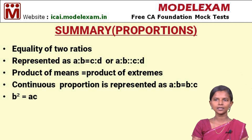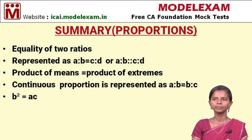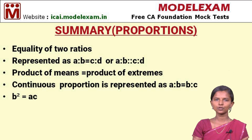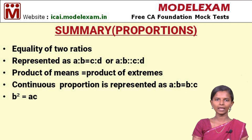The next point is continuous proportion, where there are only three terms: A, B, and C. We write it in proportional form as A is to B equals B is to C. Here also the product of extremes equals the product of means, giving us B squared equals A times C. The mean proportional value will be B, so if we want to find B, it is equal to the square root of A times C. This is about the summary of proportions.